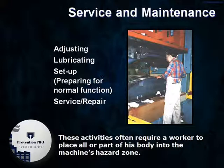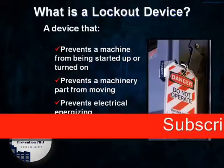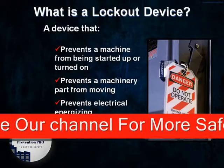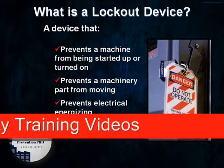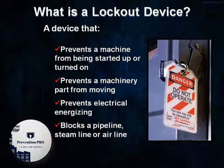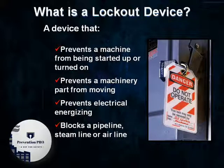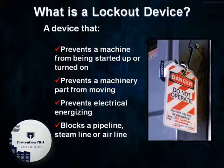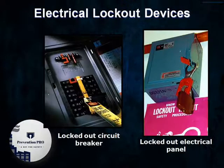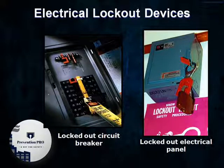What is a lockout device? A lockout device prevents a machine from being started up or turned on, prevents a machinery part from moving, prevents electrical energizing, and blocks a pipeline, steam line, or air line. Electrical lockout devices include: locked out circuit breakers and locked out electrical panels.